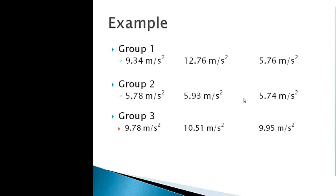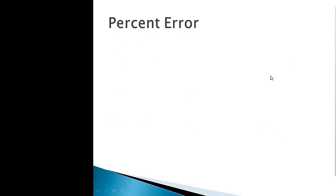And then if we look at group three: 9.78, 10.51, and 9.95. Those results, I would say they're pretty close to that 9.81 overall. So I would say group three is probably accurate. If you look at their precision, I would say those results are close to one another. So group one: not accurate, not precise. Group two: not accurate, but they are precise. Group three: they are both accurate and precise.